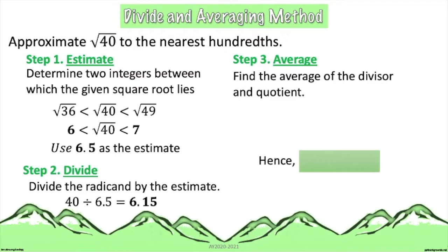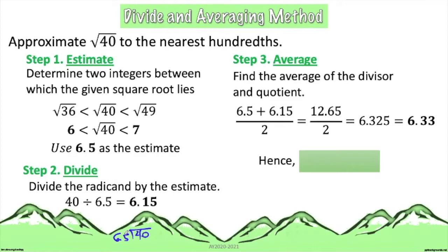For step 3, we get the average of the divisor and the quotient. In step 2, the divisor is the number outside the division box, which in this case is 6.5. So we get the average of 6.5 and 6.50: (6.5 + 6.50) divided by 2. Adding the numerator gives us 12.65, divided by 2, and the answer is 6.325.